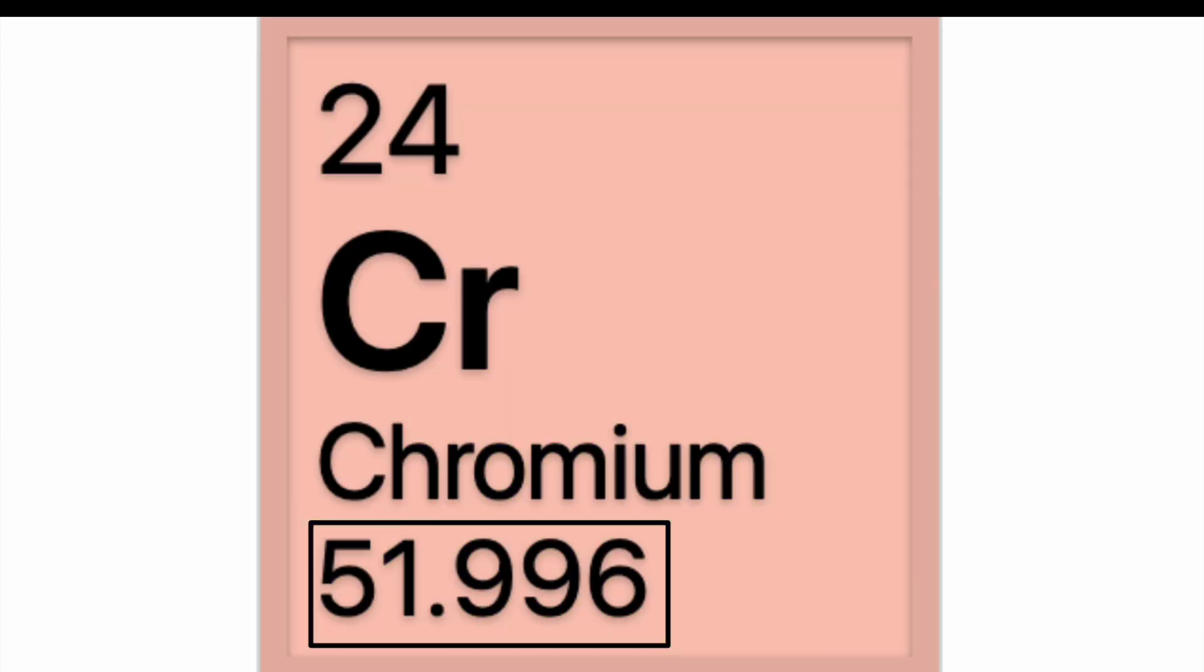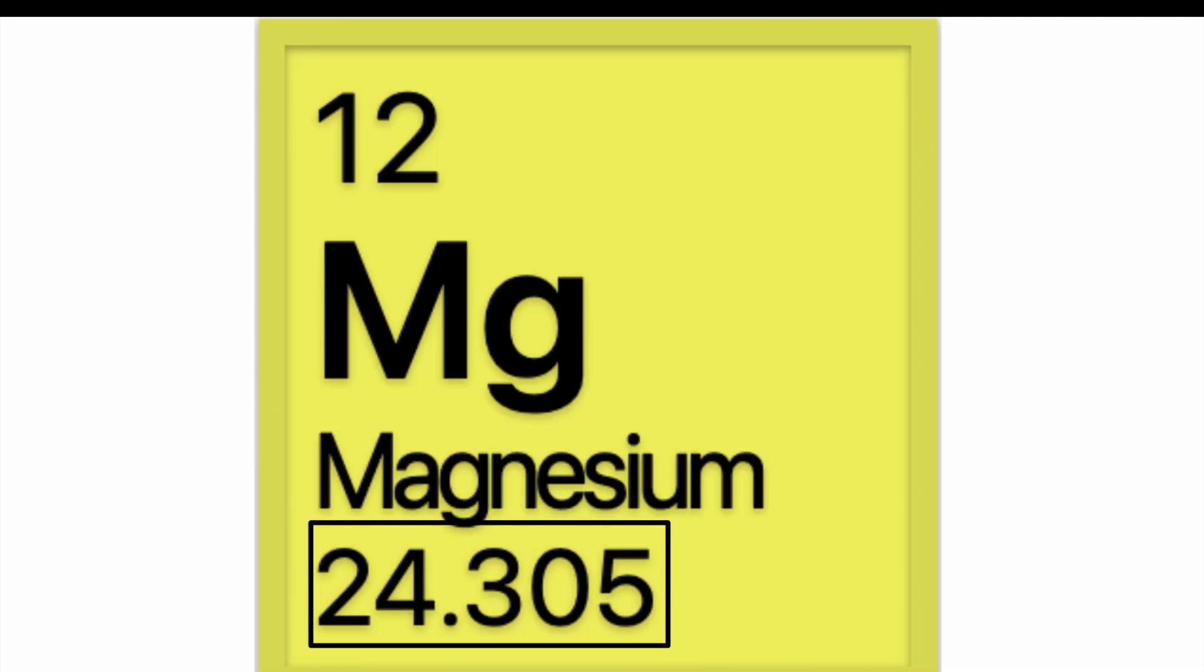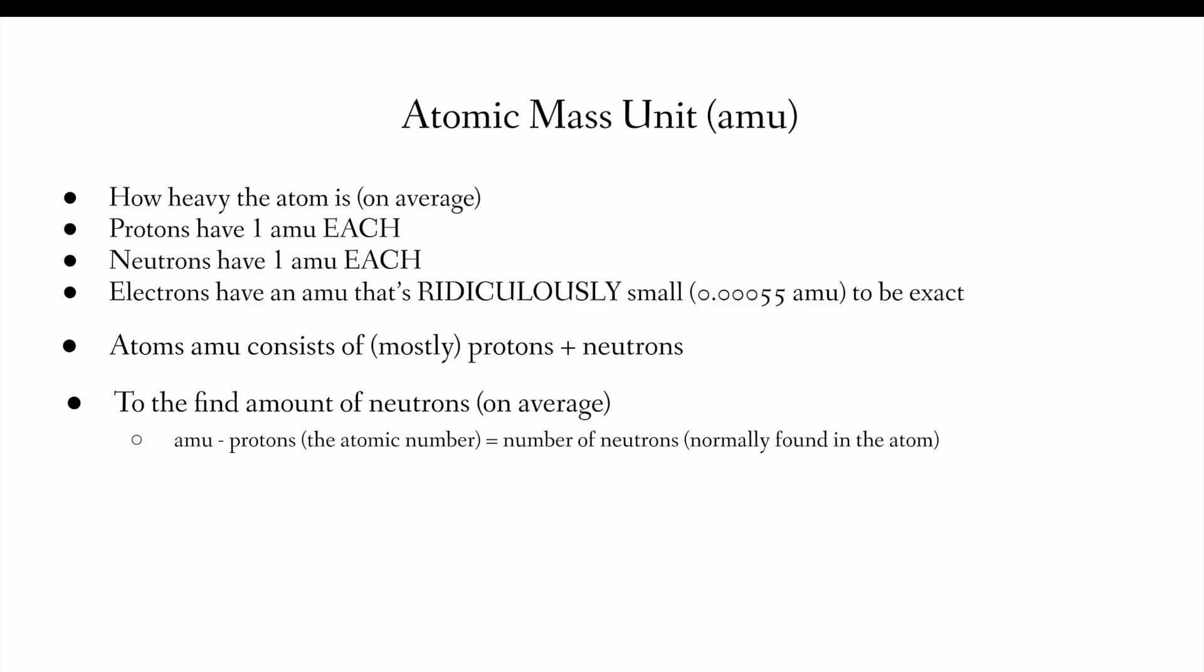But what about the box number there and there and there and there? Well, that is the atomic mass unit. The atomic mass unit is how heavy the atom is. Protons have one amu each. Neutrons have one amu each. Electrons have an amu that's ridiculously small. Basically 0.000055 amu to be exact. I might have missed a zero. I might have added an extra zero. Point is, it's ridiculously small.